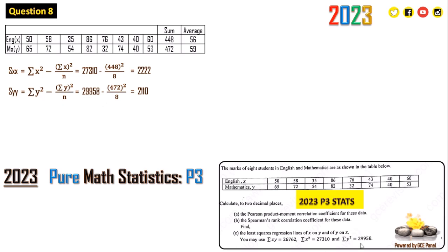Then for y, the variance for y, we have summation y squared minus summation y all squared over n. For y squared according to the data we have 29958 minus 472 squared when we sum all the y's, 472 squared all that on 8, that's going to give us 2110. Now for Sxy, we are going to have summation xy minus summation x times summation y all over n. Summation xy given in the equation is 26762 minus 448 times 472 all on 8. When we simplify that we have 330.